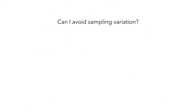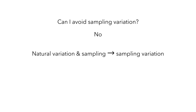You might be wondering whether you can avoid sampling variation. Alas, the answer is no. As long as there is natural variation in the population and you're taking a sample using a random process, then there will be sampling variation. But you can reduce the amount of sampling variation.